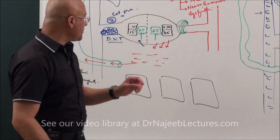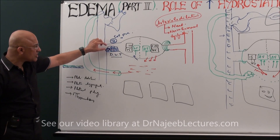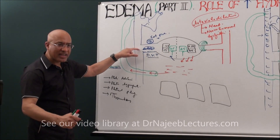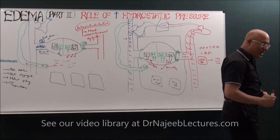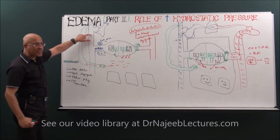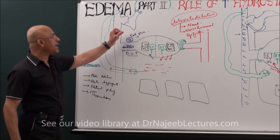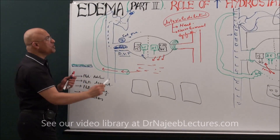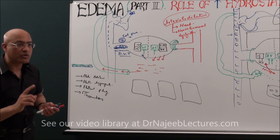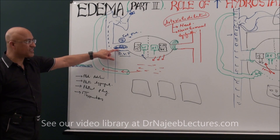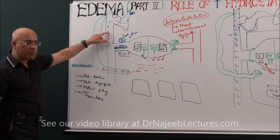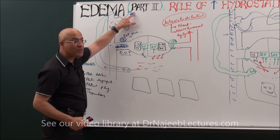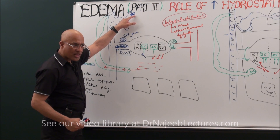If that thrombus detaches and breaks away, starts moving through the vessel, it is then called an embolus. This thrombus-turned-embolus keeps moving and can go to another part of the vascular system and block it. When blockage occurs this way, we say that part of the vascular system has undergone thromboembolism. So: thrombus is attached; embolus is freely moving; thromboembolism is when it blocks a new site.